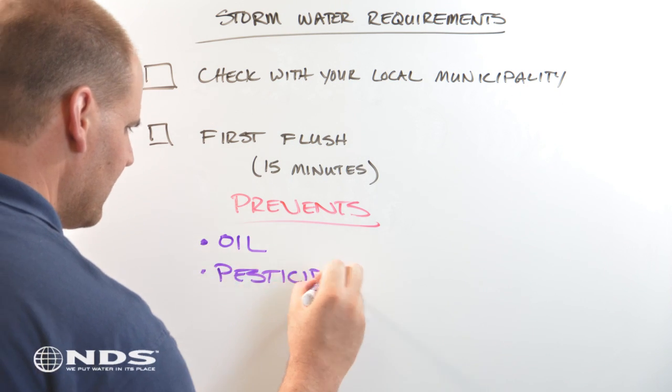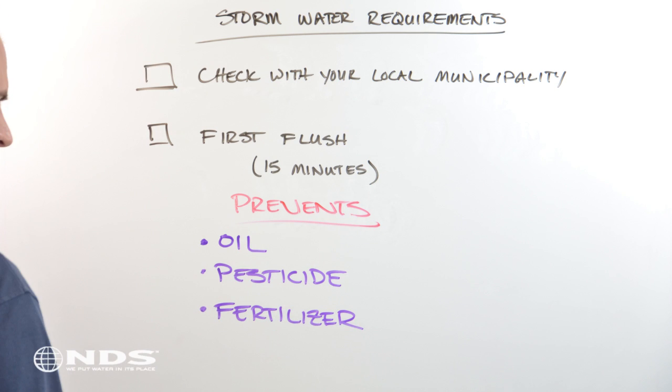Many municipalities follow the first flush rule. This rule states that the first 15 minutes worth of runoff must be stored on your property. The first flush picks up the oil, pesticide, fertilizer, and other pollutants that are located on the ground. By capturing and storing this water on site, these chemicals are not washed into the public storm system.